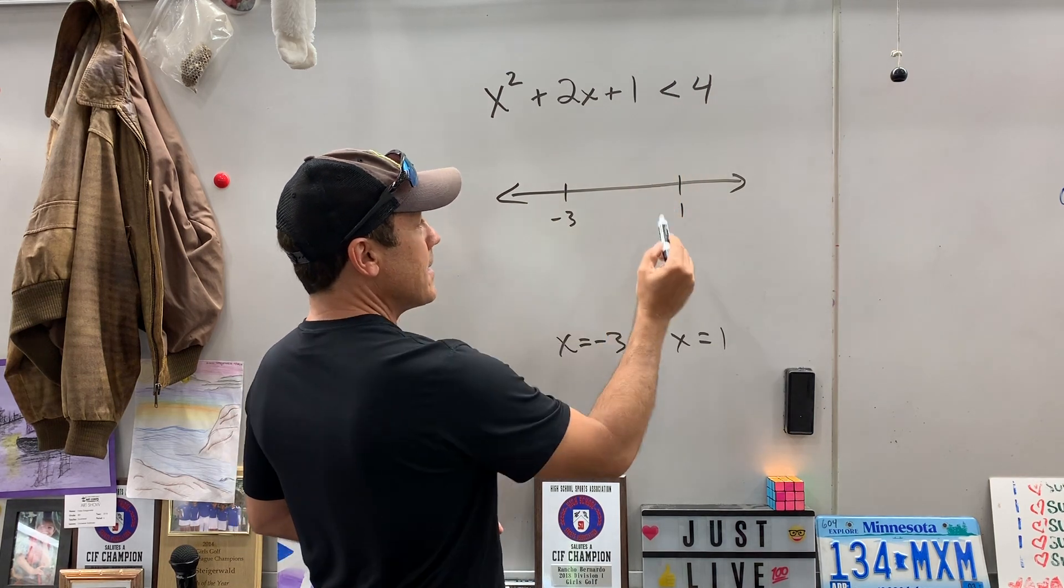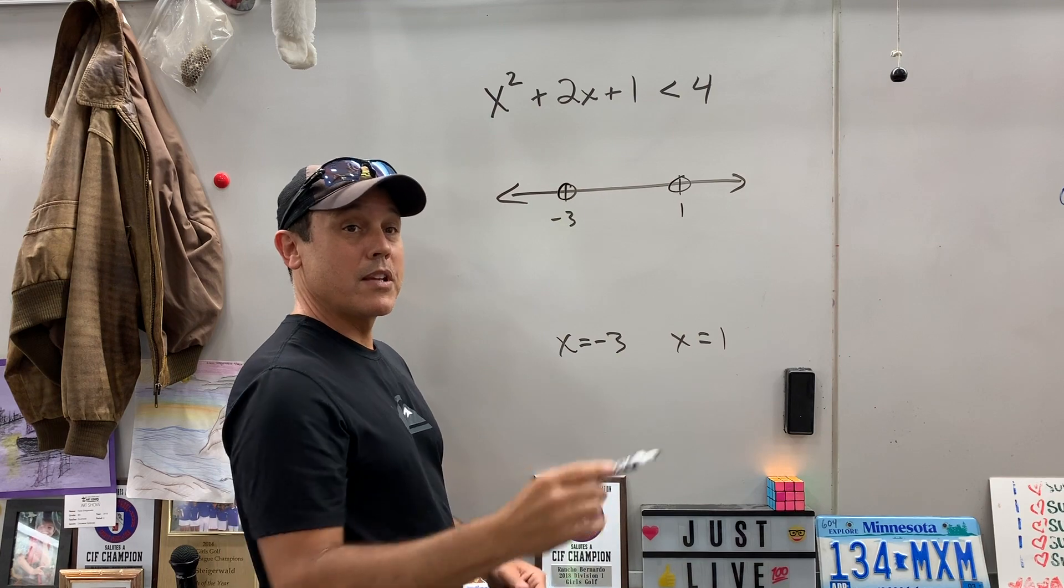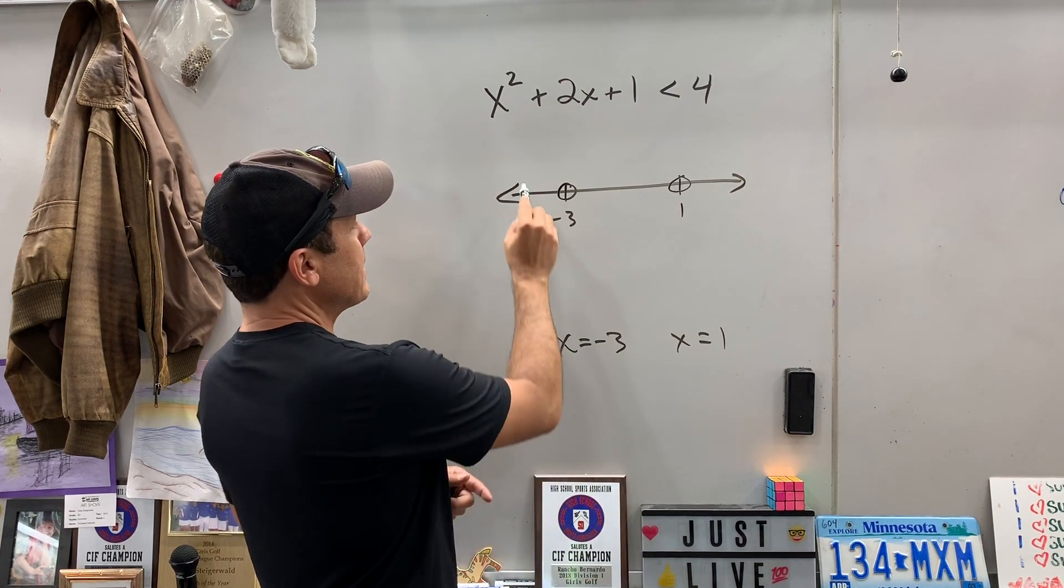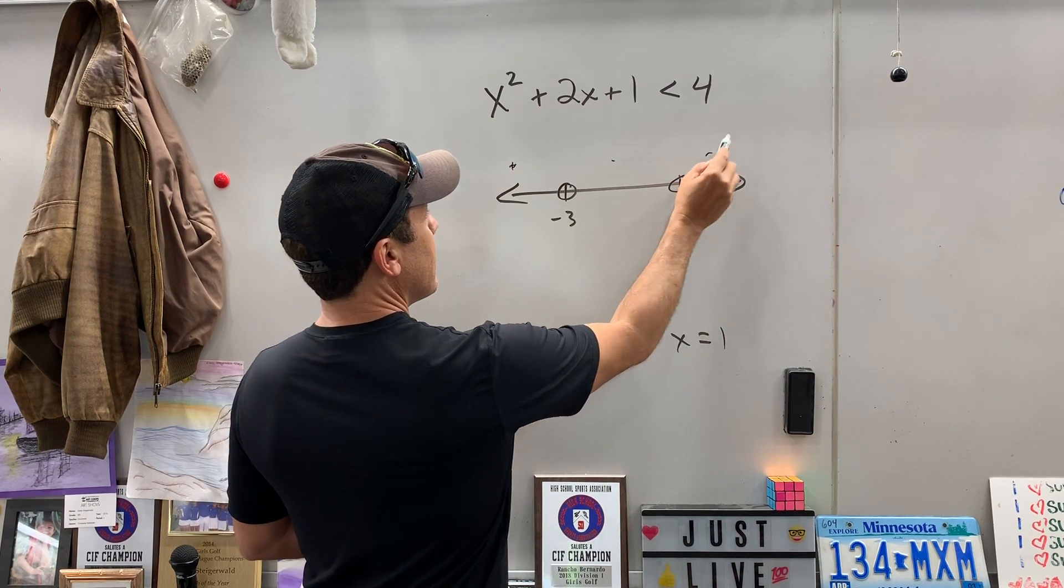Well, since this is less than, we know they're going to be open circles. If it was less than or equal to, they would be colored in. So now we've got to test points. There's a point we've got to test here, here, and here, okay?